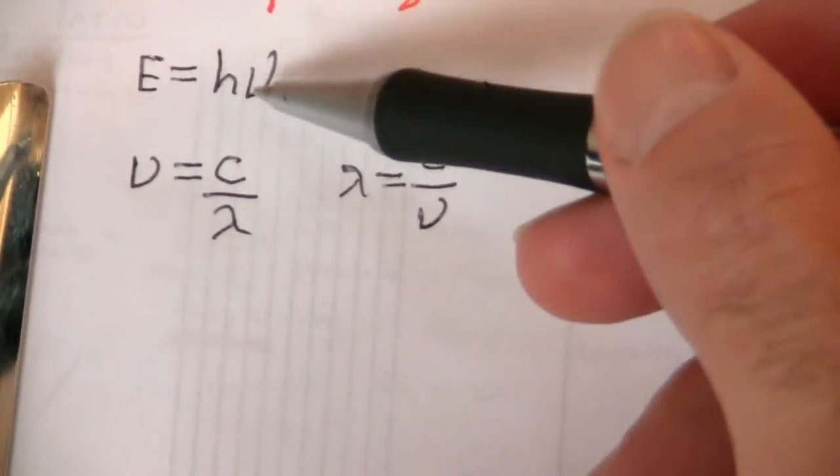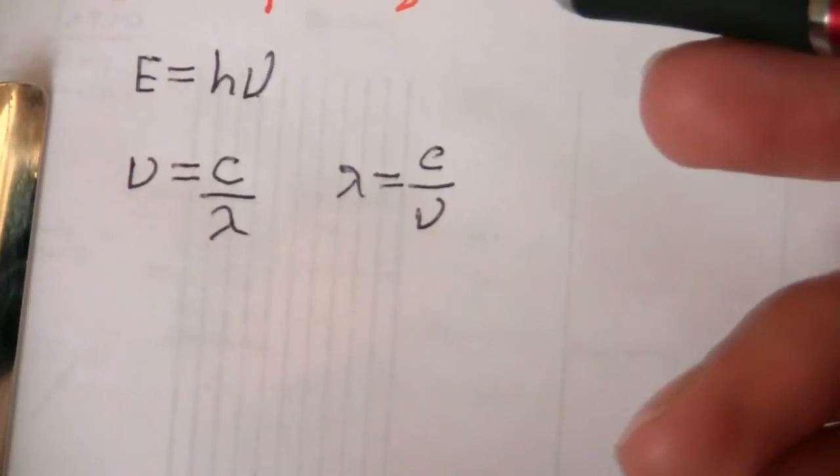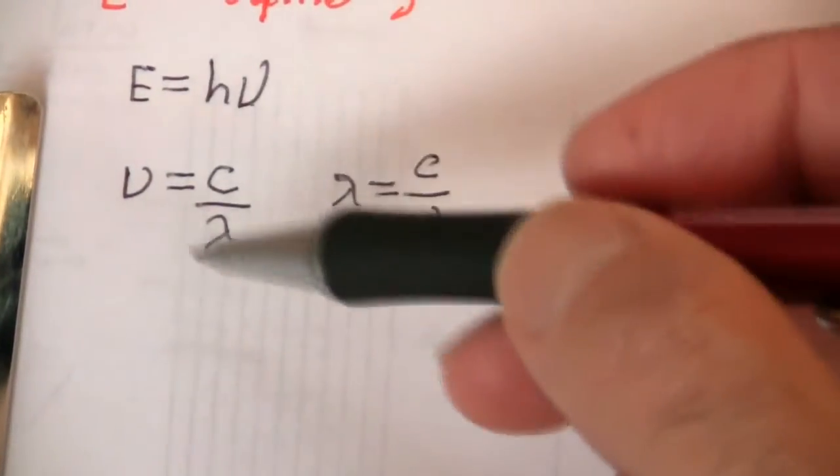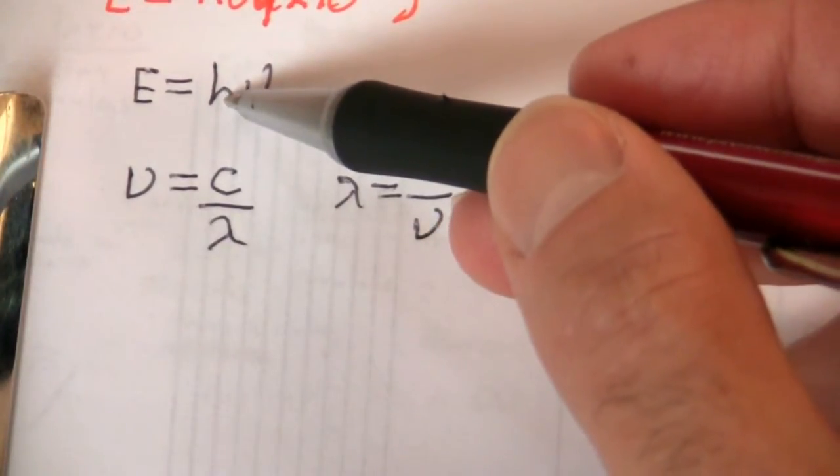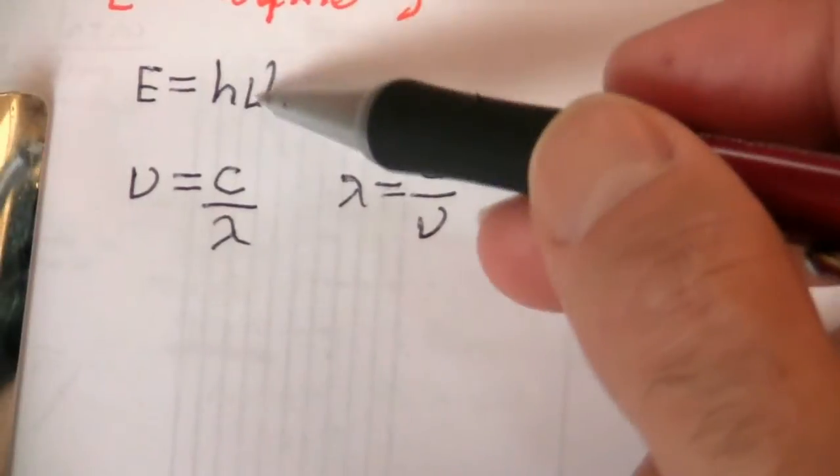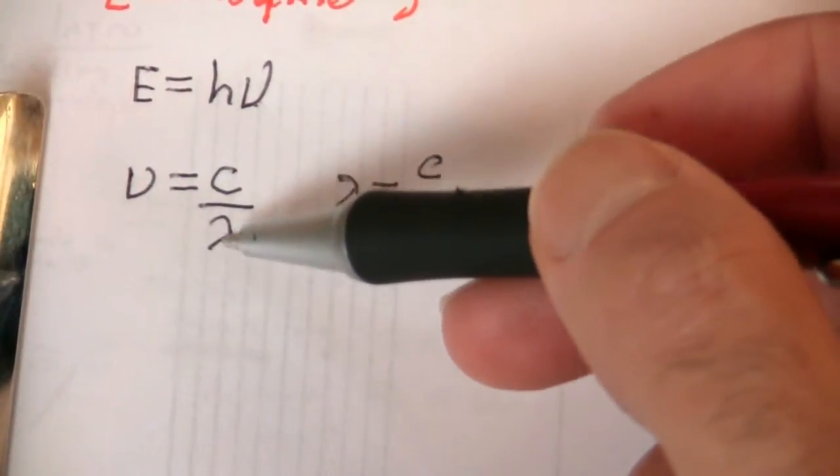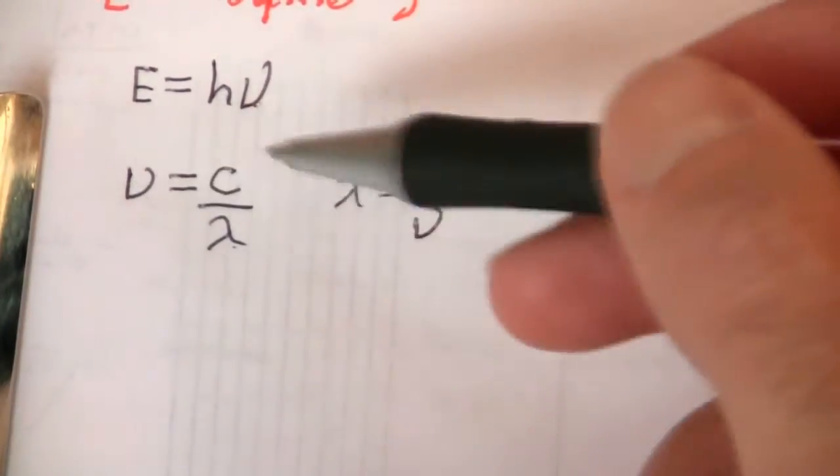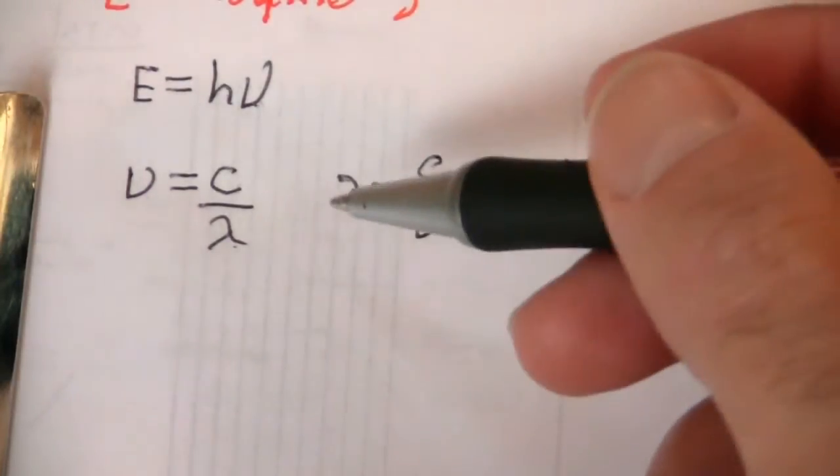So here we have energy related to frequency, and we want to find wavelength. So we kind of have to do a two-step process. We can put in the energy here, and we have Planck's constant, that'll be given, and then we can find the frequency. And then knowing the frequency, we can put in the speed of light and frequency and find the wavelength. Or you could put it like this.